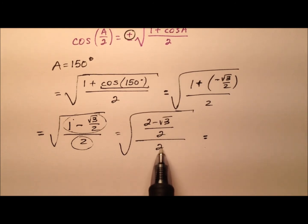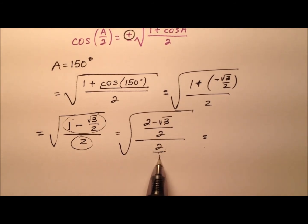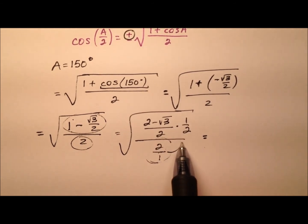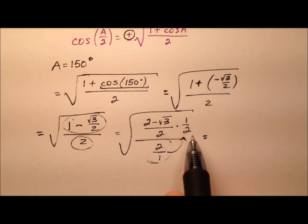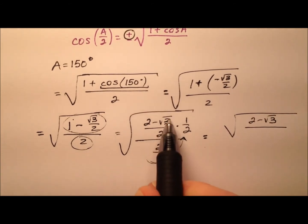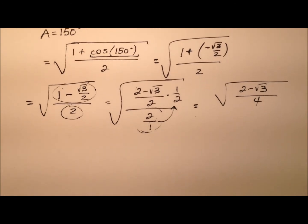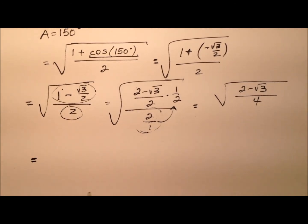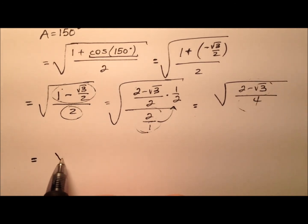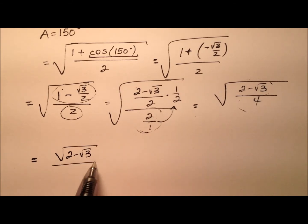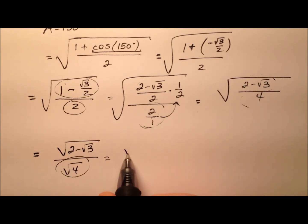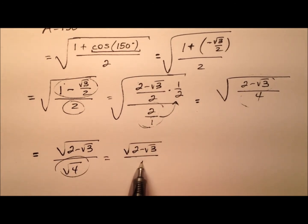Taking this one step further: in the denominators it's really 2 over 1, so if we divide we're really multiplying by the reciprocal, so that 2 gets brought up. Now we have the square root of 2 minus radical 3, all over 4. Let's break up this radical expression — the square root of 2 minus radical 3 over the square root of 4. And the square root of 4 comes out to just 2.